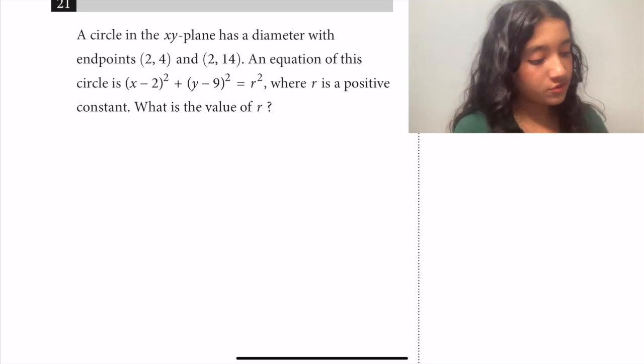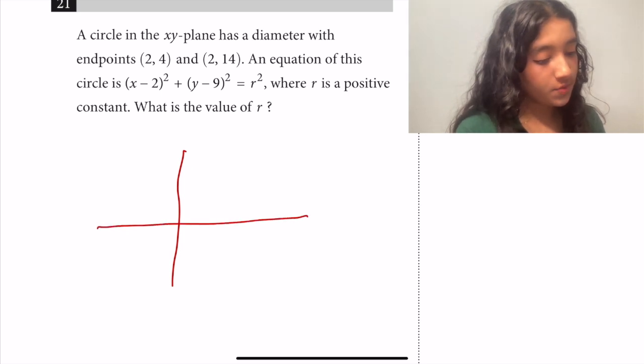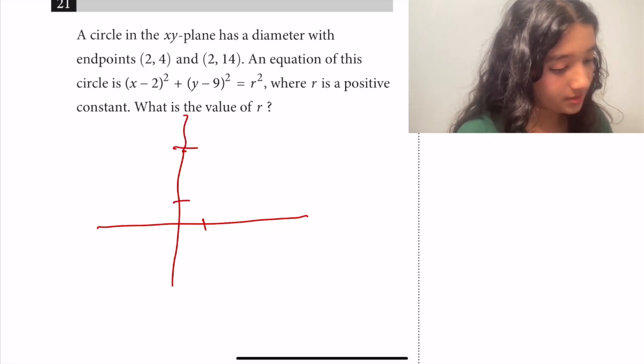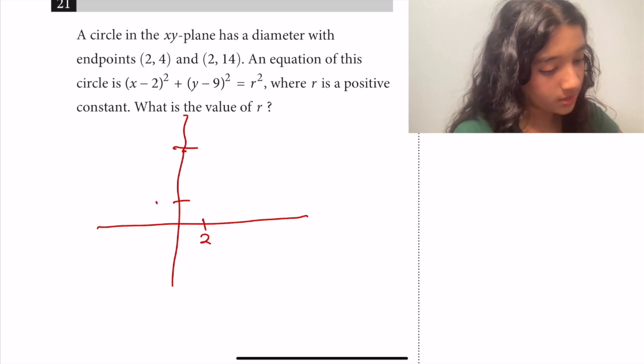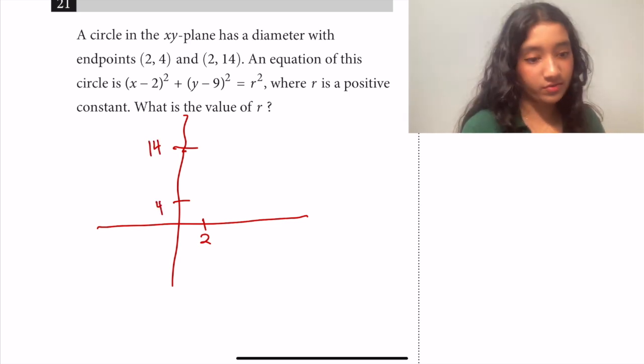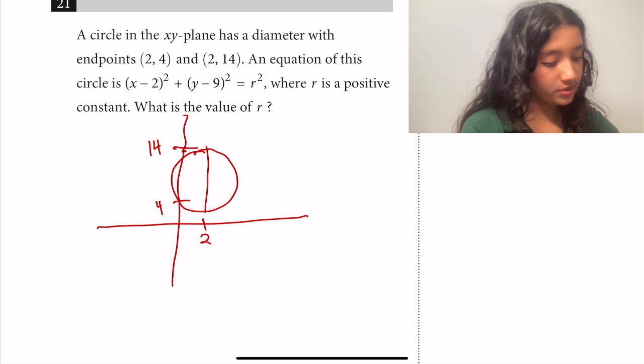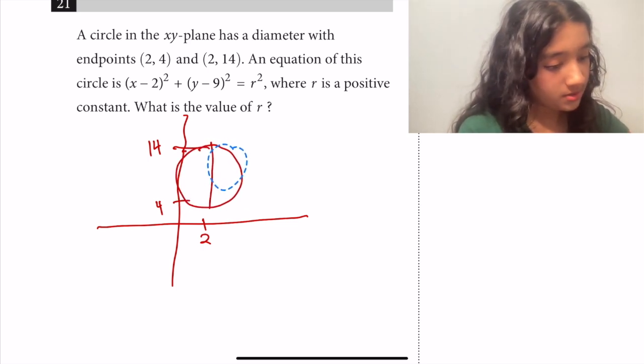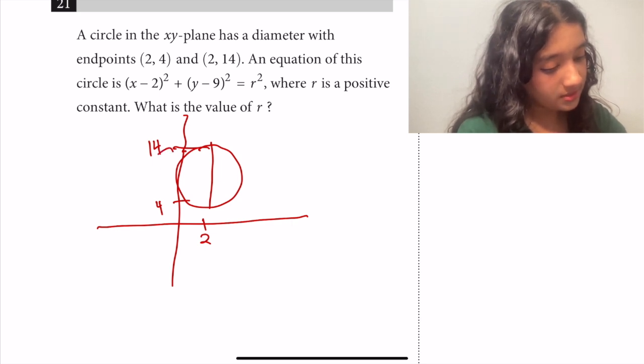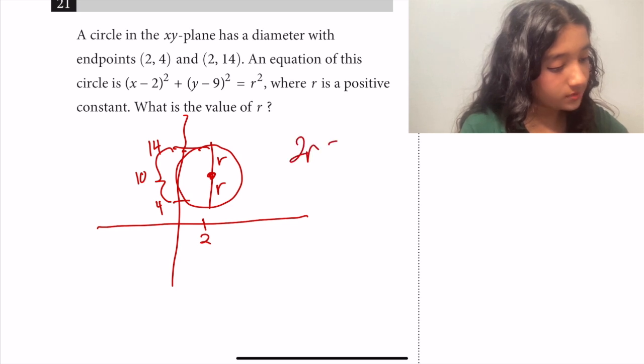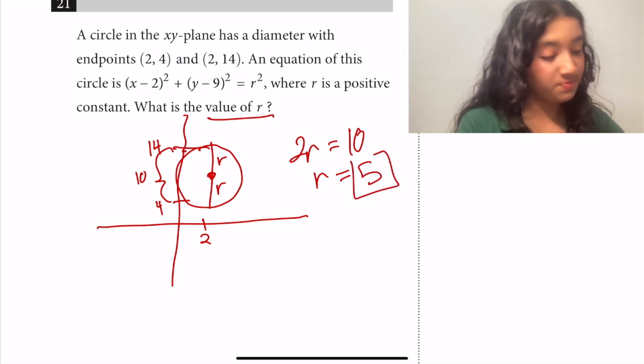So we can draw this out so that we have a better understanding of what we're given. So we have the diameter with endpoints (2, 4) and then we'll extend that. We'll say that that's x equals 2 and that's y equals 4 and y equals 14. In this case it might not really be drawn to scale. And so if that was our circle and that's the diameter, I know this isn't a perfect drawing, then we know that this distance between 4 and 14 is 10, and we know that our diameter is just equal to 2r. So if we know that 2r equals 10, then we have that r, radius, is equal to 5, and it's just asking for the value of r. So the answer is 5.